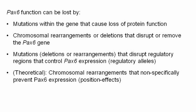To recap this part of the talk: Aniridia is typically caused by loss of Pax6 function, and by this I mean at the protein level. Pax6 function can be lost by mutations within the gene that cause a loss of protein function — these are the nonsense mutations, the splicing mutations, and all of those sorts of things. There can also be chromosomal rearrangements or deletions that disrupt or remove the Pax6 gene.